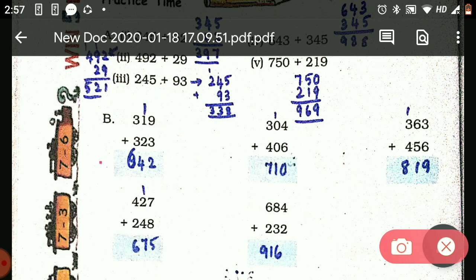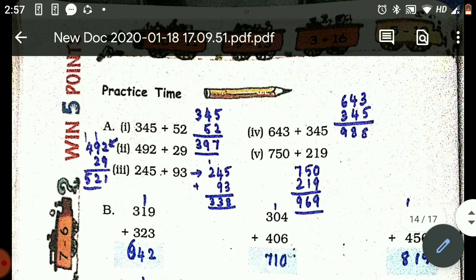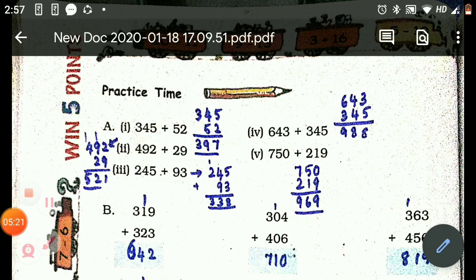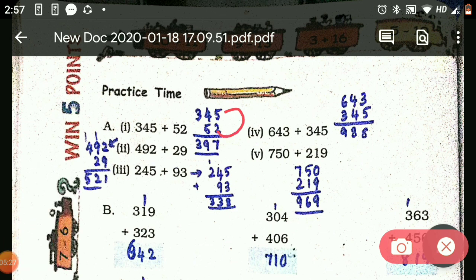See here, 345: 5 plus 2 is 7, 4 plus 5 is 9, and 3, so 397. Here for the second one I have solved, 521. Third one is 338.